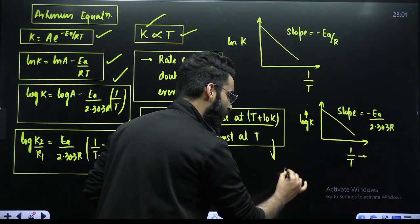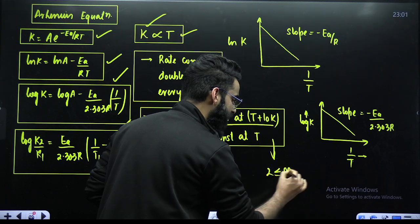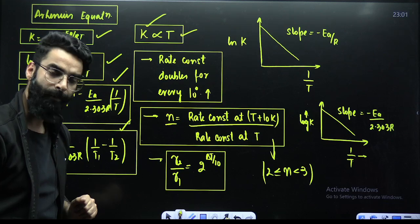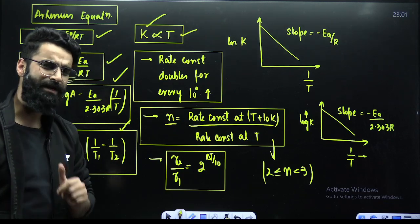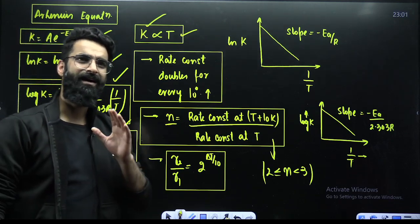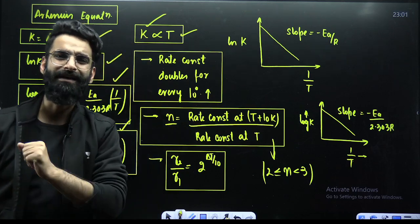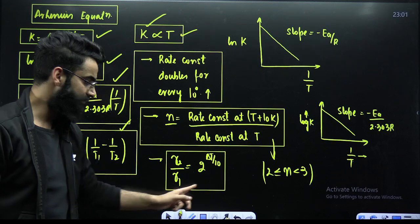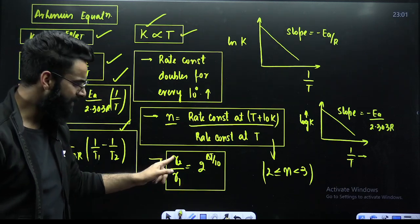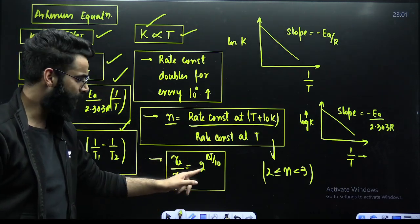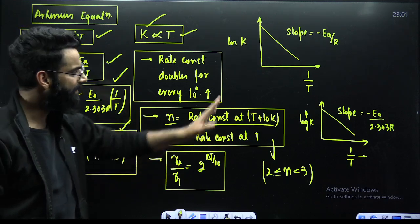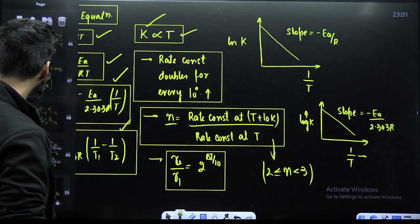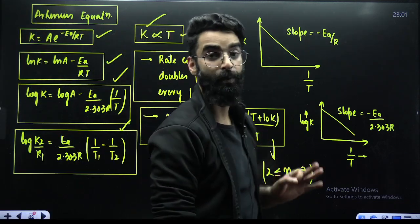The temperature coefficient N varies between 2 and 3. For questions on changing temperature from, say, 10 degrees to 100 degrees — asking how many times rate will increase — use the equation: R2 divided by R1 equals 2 raised to the power (delta T divided by 10). You should also remember the two graphs related to the Arrhenius equation.